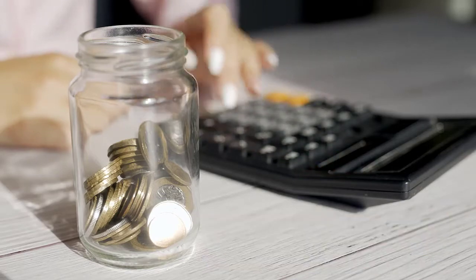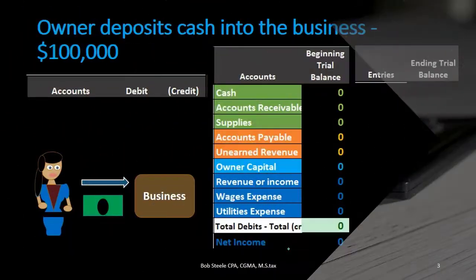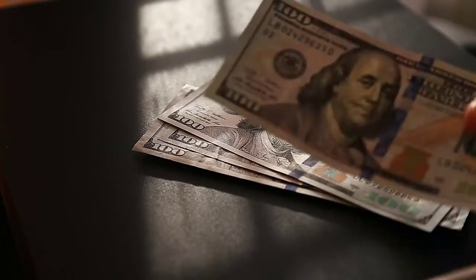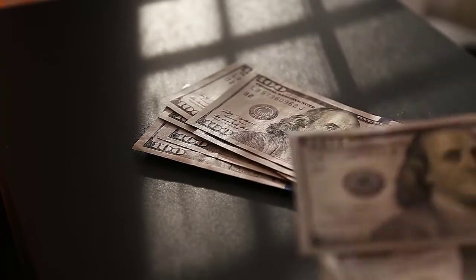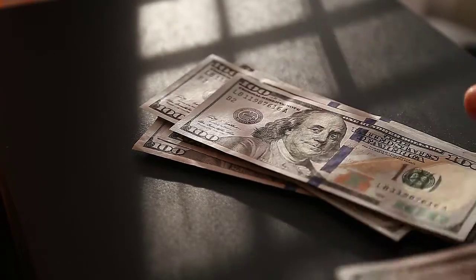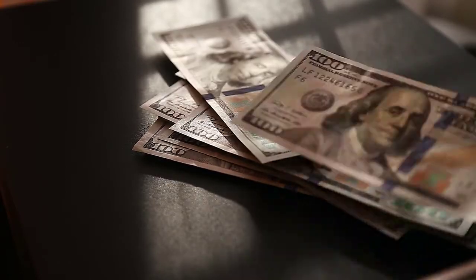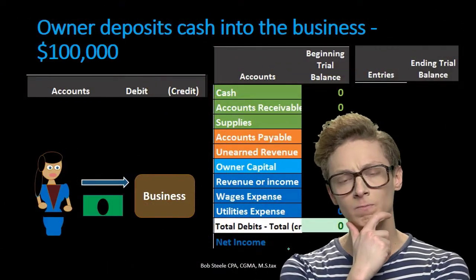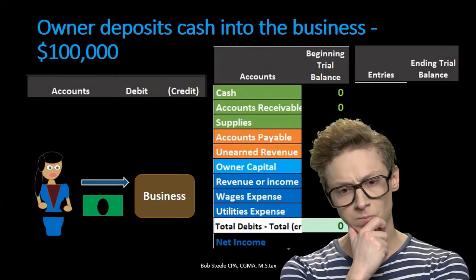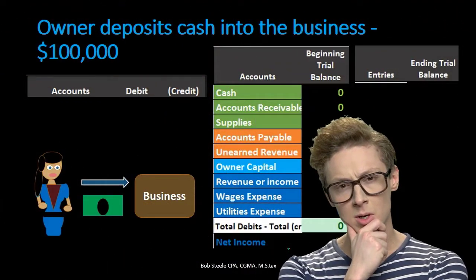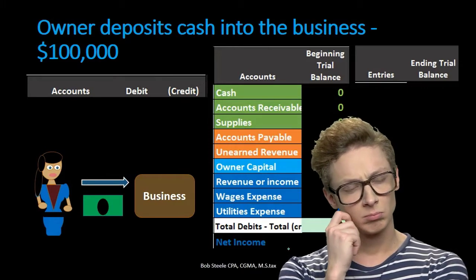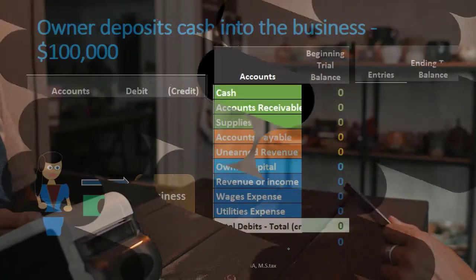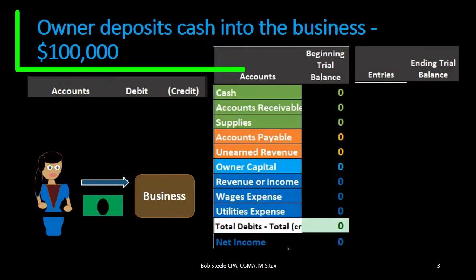We're going to start with transactions that include cash because cash is going to be the account we get most familiar with. It's our first question in our thought process. Once we understand what is going on with cash, we can then understand what is going on with the second component of the transaction.